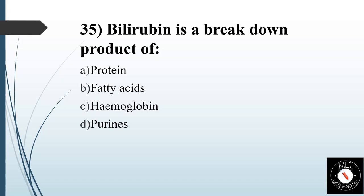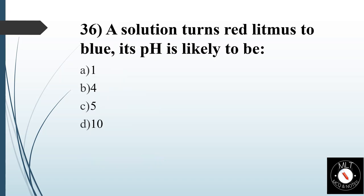Thirty-fifth question. Bilirubin is a breakdown product of. Option A: Protein. Option B: Fatty acid. Option C: Hemoglobin. Option D: Purines. Answer is Option C: Hemoglobin.